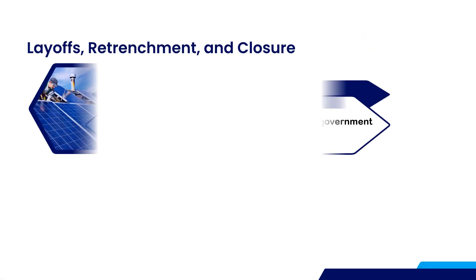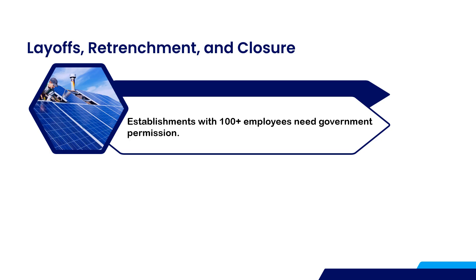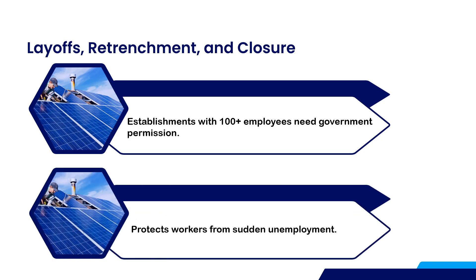The act also governs layoffs, retrenchments, and the closure of establishments. In establishments employing one hundred or more workers, the employer must seek government permission before laying off employees or shutting down operations. This protects workers from sudden unemployment and ensures that employers follow due process.